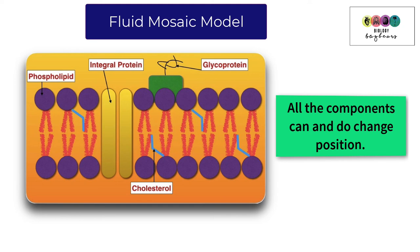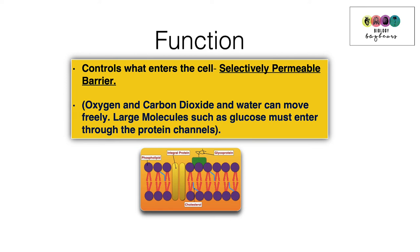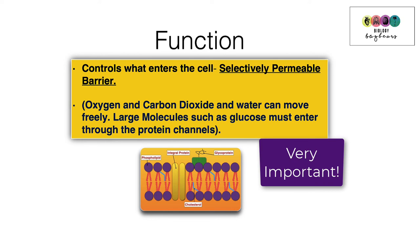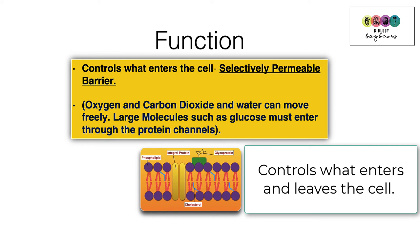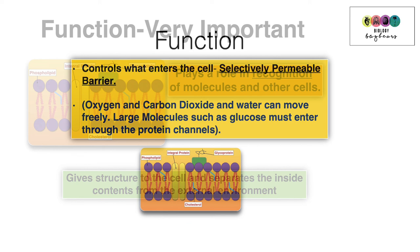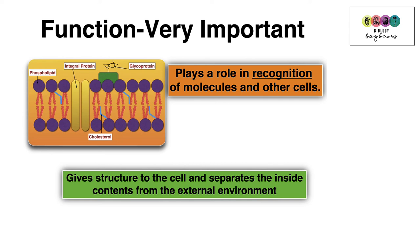One of the most important things to know about the cell membrane is its function. First, it acts as a selectively permeable barrier, controlling what enters and leaves the cell — some molecules move freely through the phospholipid bilayer while others are tightly controlled. It also plays a role in the recognition of molecules and gives structure to the cell, separating the inside contents from the external environment.